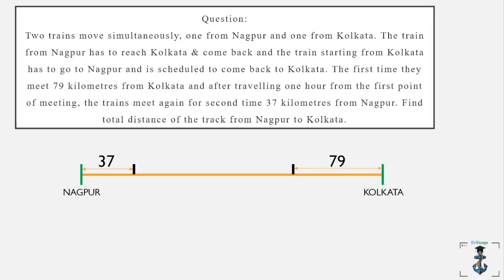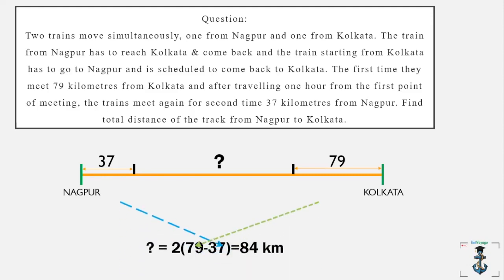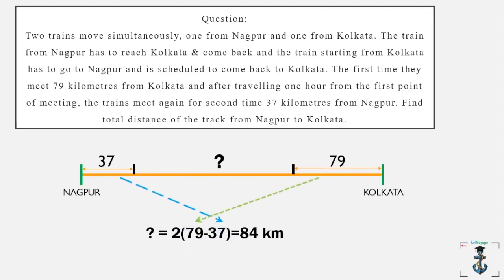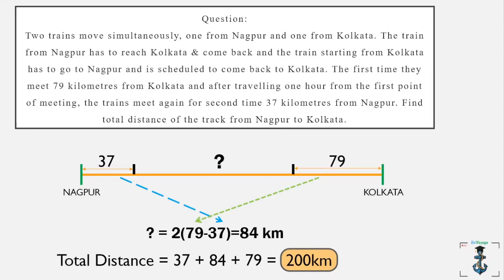So you'd be wondering what is this distance in between? This distance is nothing but twice the difference of the two given distances — we take the positive number for that. So in this case, it is 2 into (79 minus 37), which is 84 kilometers. And the total distance would just be the addition of this, which would be 200 kilometers. It's as easy as that.